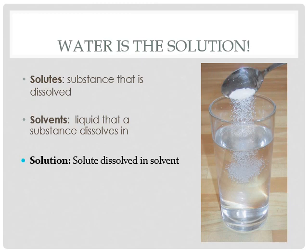Let's talk about what makes water so very important. Different types of chemicals can get dissolved into water to create a solution. A solution is simply a solute dissolved in a solvent. The solute is the substance that's dissolved. The solvent is the liquid that does the dissolving. So when you have a solute with a solvent, you get a solution.